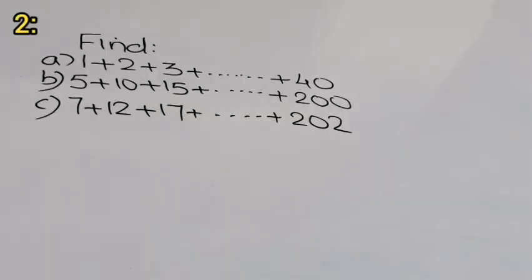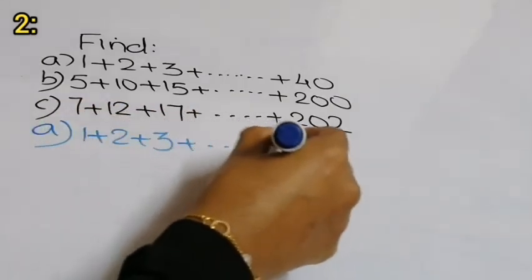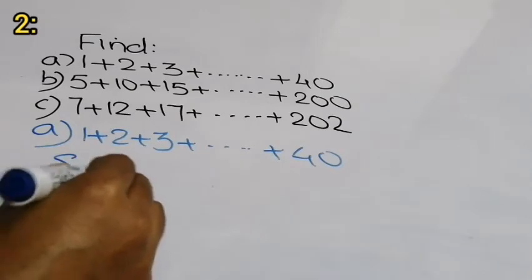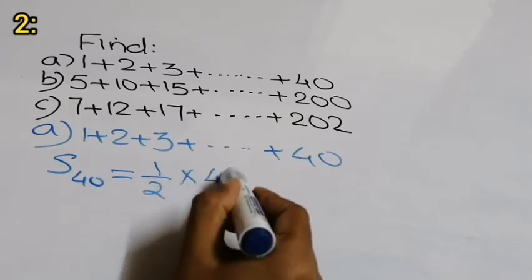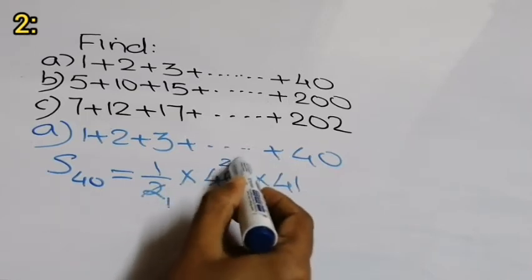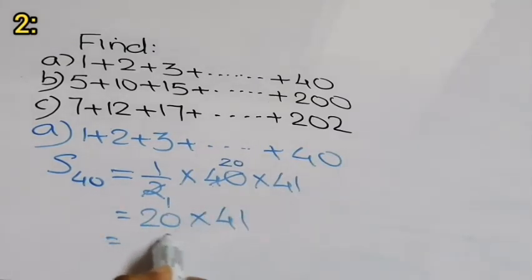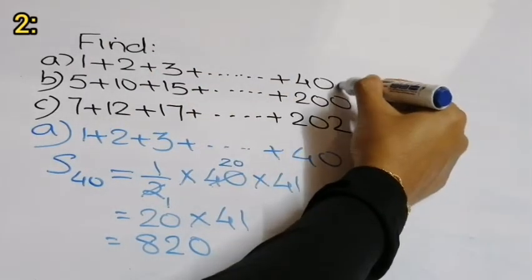Moving on to the next question — a similar type. Here we have natural numbers: 1 plus 2 plus 3 up to 40. There are 40 natural numbers, so we directly write: one-half into 40 into 41, which gives us 20 into 41 equal to 820. This is the answer for the first part.